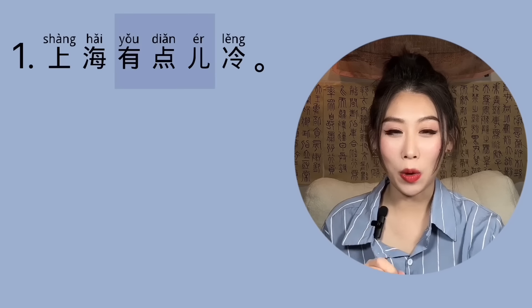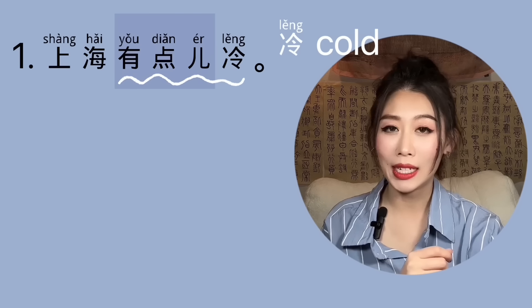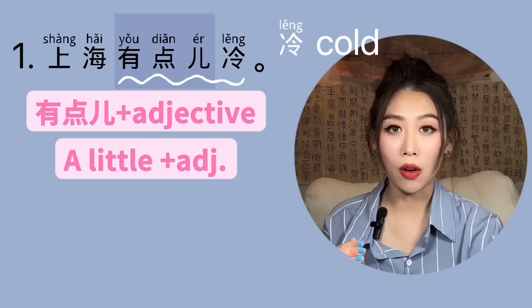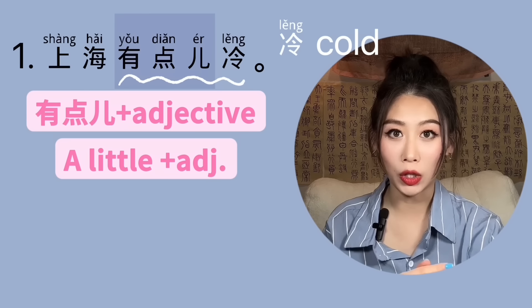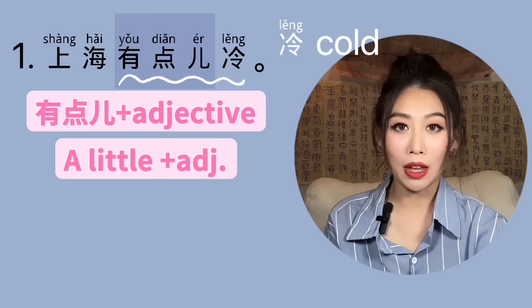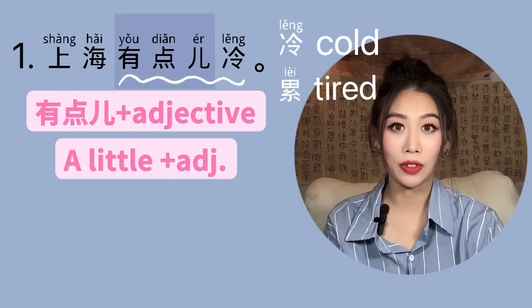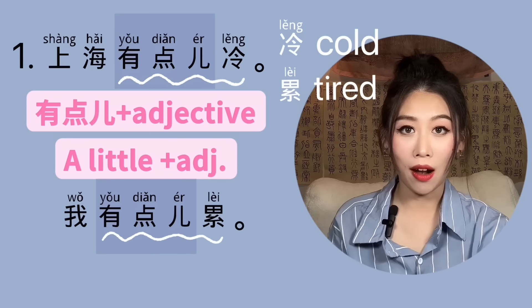Now let's take a close look at my example sentences. Number one: 上海有点冷。冷 is an adjective, so 有点儿 with an adjective means 'a little adjective.' For example, 'I am a little tired' — tired is an adjective, so we say 我有点儿累。